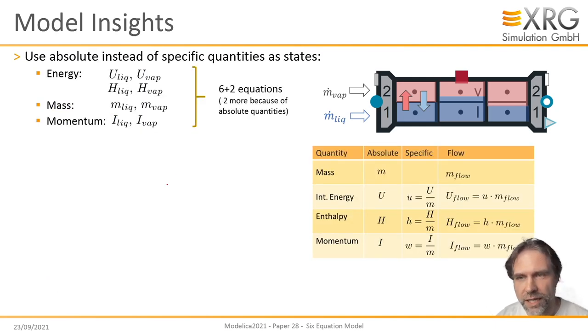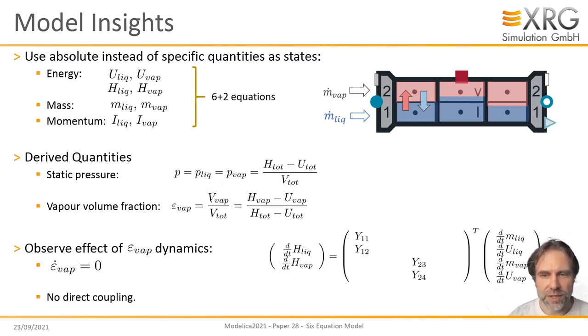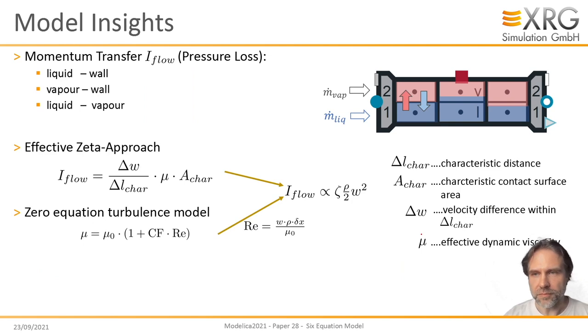And this is how the model looks like. We have energy balance for internal energy, mass balance and momentum balance. We pick up two more equations because we're now dealing with absolute quantities. So we choose the absolute entropy. Why? It's simply because this allows us to derive static pressure and vapor volume fraction in a simple algebraic way from the states. Moreover, writing up these time evolution equations for this absolute entropy uncovers nicely the interaction of the vapor and liquid phase. For a stationary vapor volume fraction, this time evolution is decoupled for the phases. As soon as the vapor volume fraction changes with time, we pick up these coupling terms. So you can nicely see what is going on in the model.